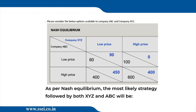Case two: suppose ABC charges a high price — look at the second row. What are the blue figures for XYZ? 450 and 400. Which is higher? 450. So once again, if ABC charges a high price, XYZ should charge a low price. Irrespective of whatever ABC does, XYZ should charge a low price.